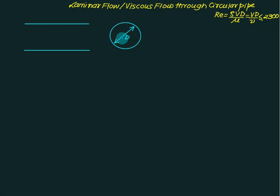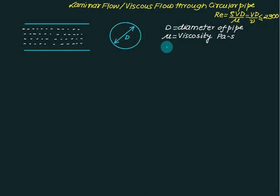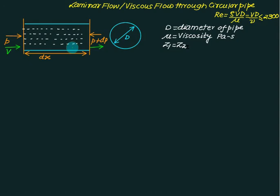Consider a pipe of diameter D through which fluid is flowing with viscosity mu. The pipe is laid horizontal, so Z1 equals Z2. Consider two sections: let the pressure at the first section be P and at the second section be P plus dP, and let the length of this pipe element be dx. Let V represent the velocity. The velocity at inlet equals the velocity at outlet because discharge is constant — for steady flow, Q equals area times velocity, and since area is constant, velocity is also constant.